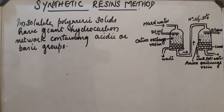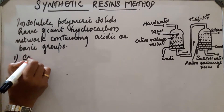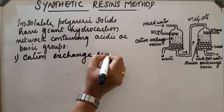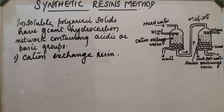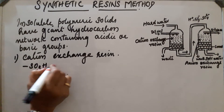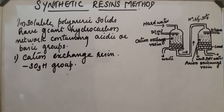Synthetic resins are of two types: cation exchange resin and anion exchange resin. The cation exchange resin contains a large hydrocarbon network with acidic groups attached to it. The acidic group attached is the SO3H group, so the cation exchange resin contains a giant hydrocarbon network with SO3H groups attached to it.